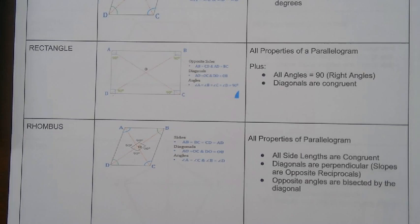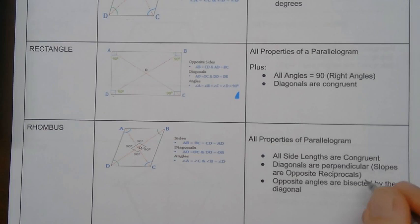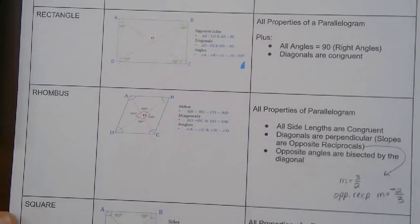This is new: diagonals are perpendicular. That means the slopes are the opposite reciprocals. So what that means is that if one of my slopes is three halves, the opposite reciprocal slope is going to be the reciprocal, so flip it upside down, and then the opposite means that it's going to be the opposite sign.